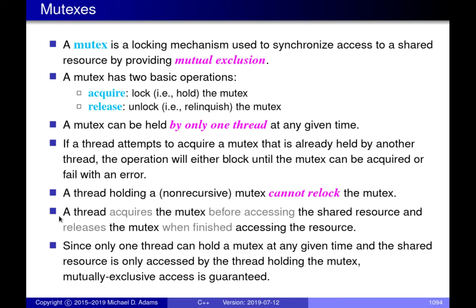The basic idea behind a mutex is if there's some shared resource — most commonly some shared state or data, in other words variables — and having more than one thread access it at the same time would be a problem, you wrap the access to the shared resource in acquiring and releasing a mutex. Before you access the shared resource you acquire the mutex, and when you're done you release it. All threads follow the convention, and unless they're holding the mutex, they're forbidden from accessing the shared resource.